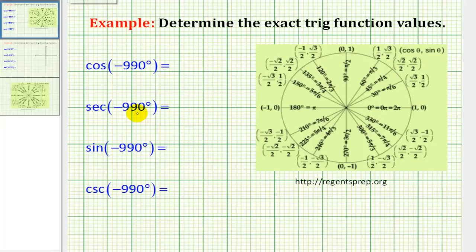So let's start by sketching this angle in standard position. So here's the initial side of our angle, and because it's a negative angle, we're going to rotate clockwise 990 degrees. So if we rotate two times clockwise, that would be negative 720 degrees.